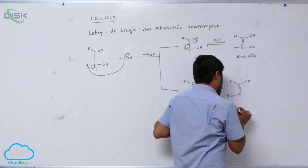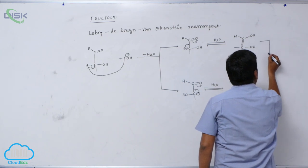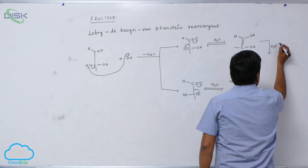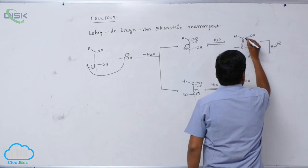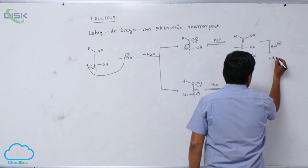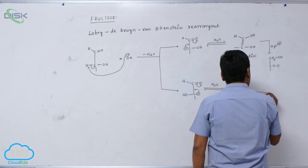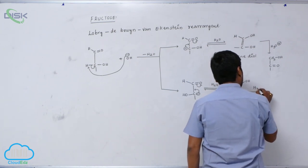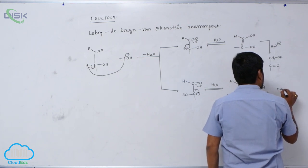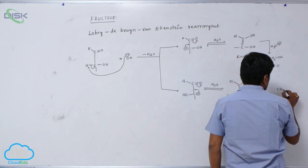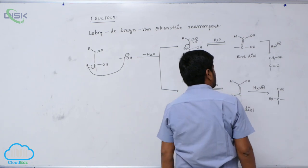This enediol intermediate is formed in the presence of water. In a similar fashion, the bond can shift to the other side, forming another enediol. On acidic hydrolysis, the first carbon undergoes a bond shift: it converts into a CH₂OH group with a C=O (keto group) — giving fructose — or the first carbon converts into an aldehyde group with OH groups — giving back glucose.